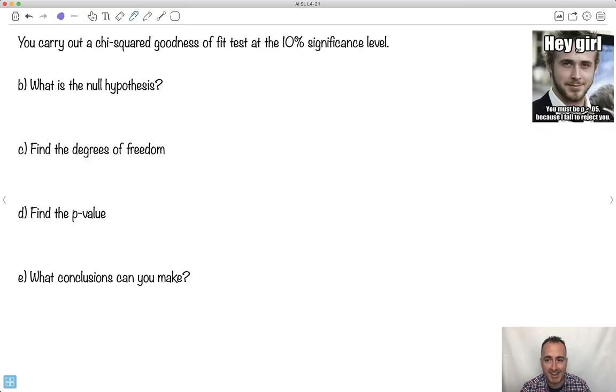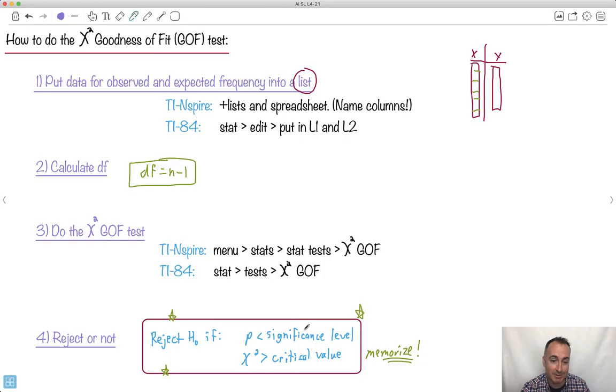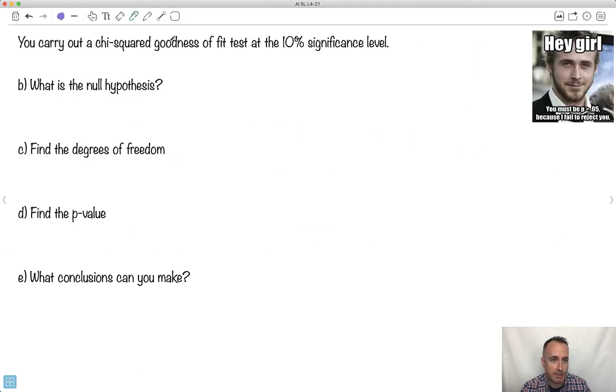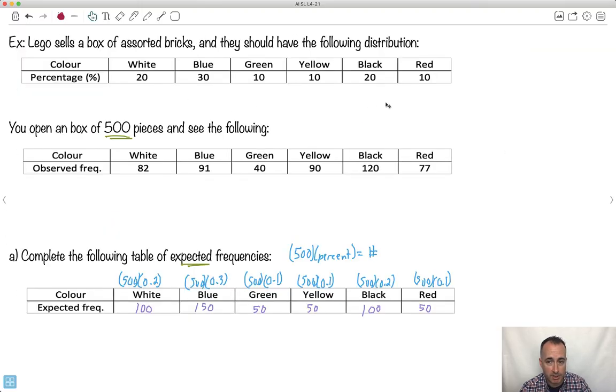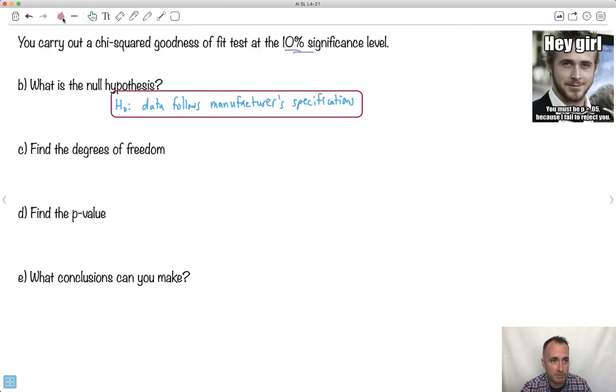Hey girl, you must be p greater than 0.05, because I failed to reject you. That's actually a pretty good joke. So you carry out a chi-squared goodness-of-fit test at the 10% significance level. What's the null hypothesis? We go H0, and we're going to say the data follows the manufacturer's specifications. In other words, it should be 20%, the specifications. What's the degrees of freedom? df is just n minus 1.